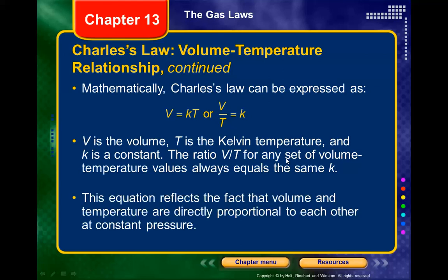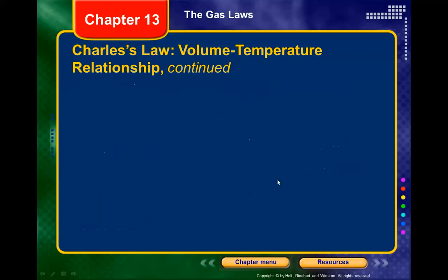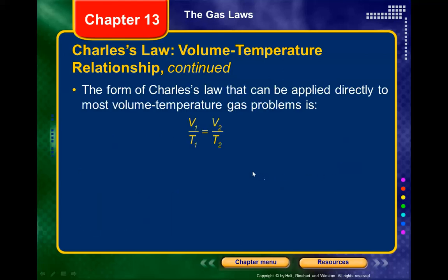Just like with Boyle's law, if the initial volume over initial temperature equals a constant, then if we change to a new volume and temperature, the ratio V2/T2 remains the same — giving us V1/T1 = V2/T2.